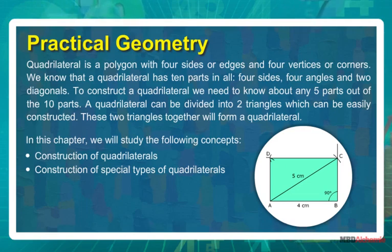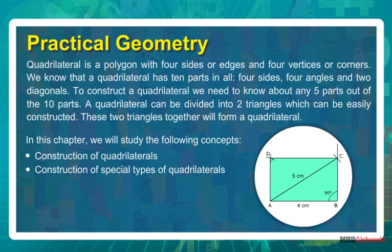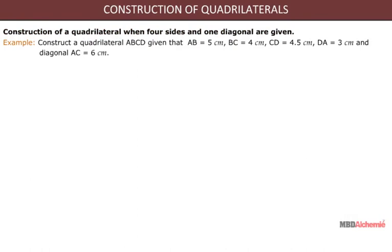These two triangles together will form a quadrilateral. In this chapter we will study the following concepts: construction of quadrilaterals, construction of special types of quadrilaterals, and construction of a quadrilateral when four sides and one diagonal are given.